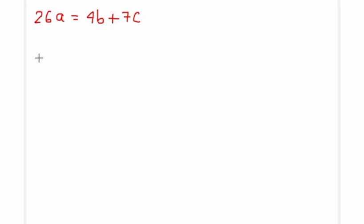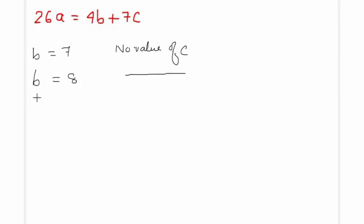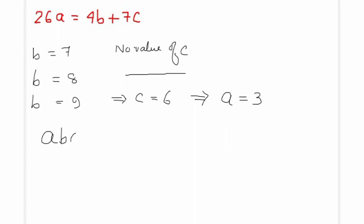If B = 7 or B = 8, no valid value of C is possible. But finally, if B = 9, then we can find C = 6, and hence A = 3. Since the 3-digit number is ABC, the required number is 369. So 369 is the third and last 3-digit number with the said property.